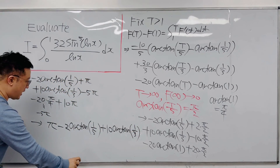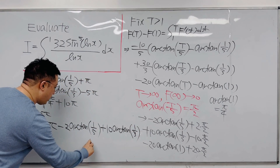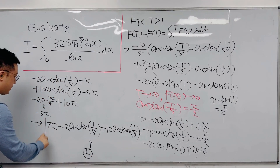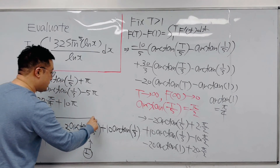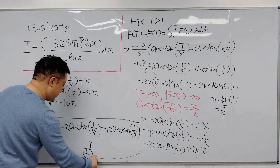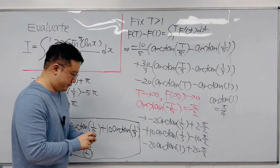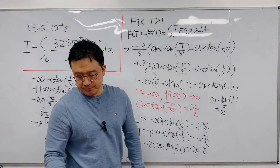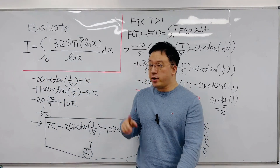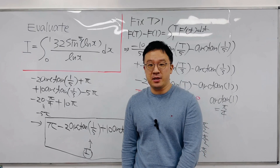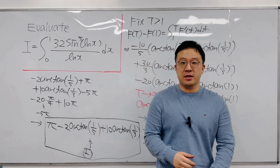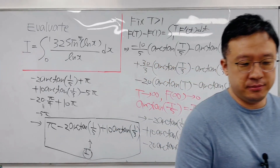This is the exact value of I, the integral we were looking for. So the final answer is π − 2·arctan(1/5) + 10·arctan(1/3). Pretty interesting integral using Feynman's technique. I'll be back with more videos with more questions like this soon. Thank you.